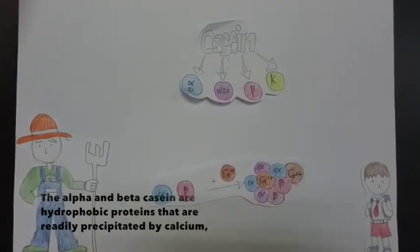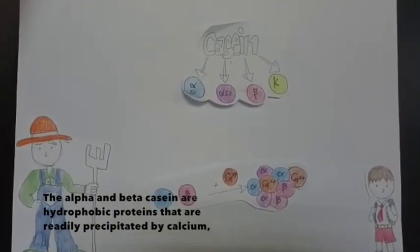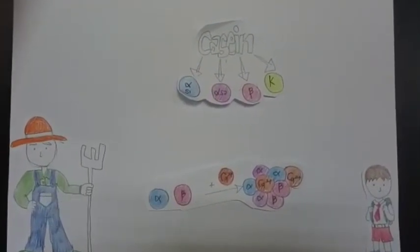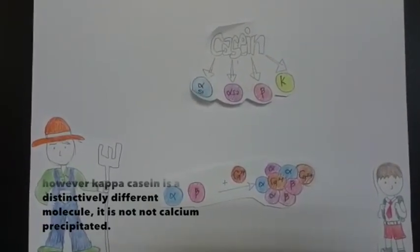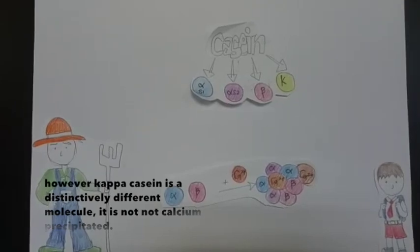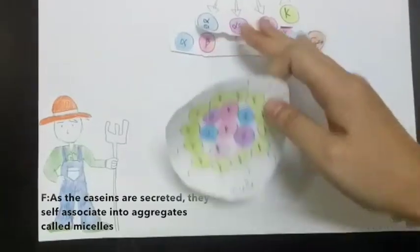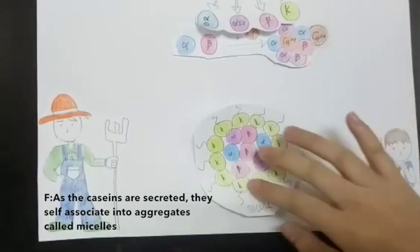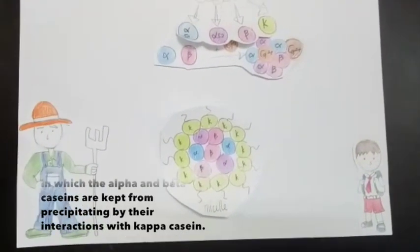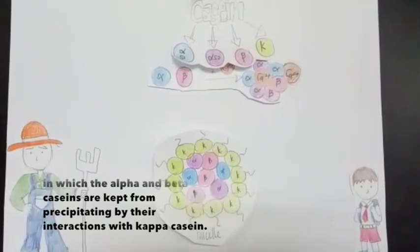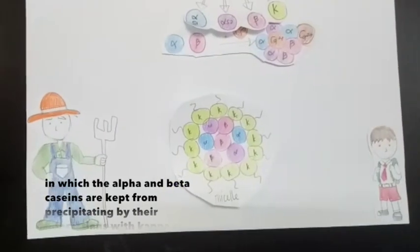The alpha and beta casein are hydrophobic proteins that are readily precipitated by calcium. However, kappa casein is a distinctively different molecule. It is not calcium precipitate. As the caseins are secreted, they self-associate into aggregates called micelles, in which the alpha and beta casein is kept from precipitating by their interaction with kappa casein.